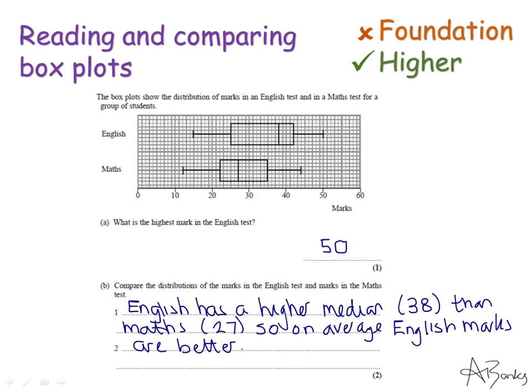My second comment then is going to be about the ranges or the interquartile ranges. Usually it's easiest to work with the range. So if I look at the range for English the highest mark is 50 and the lowest mark is 15 which is just there. So the range of the English scores is 50 take away 15 which is 35. Now I need to work out the range of the maths scores. So the highest maths score was 44 and the lowest maths score was 12 which gives me a range of 32.